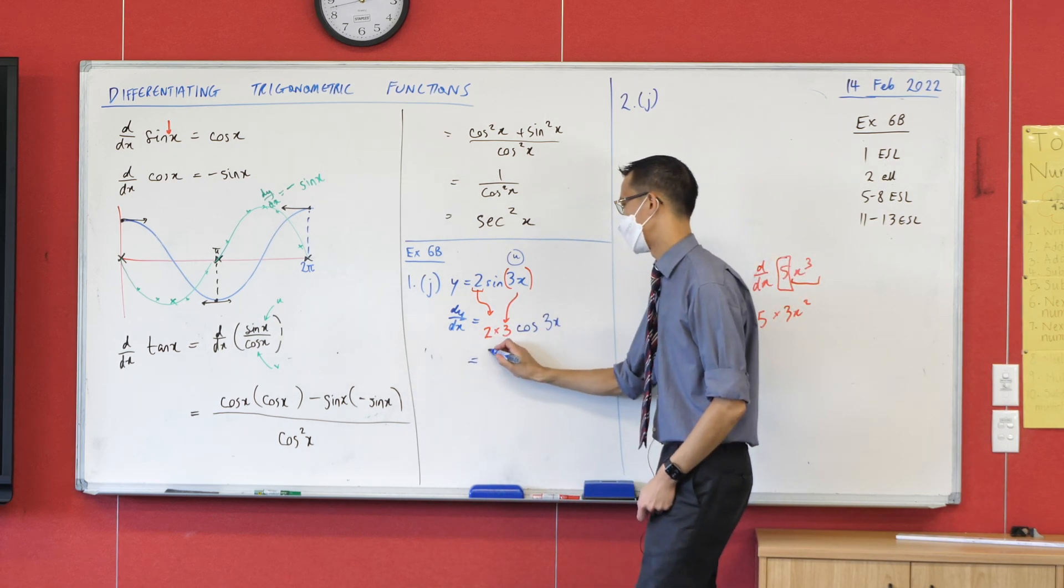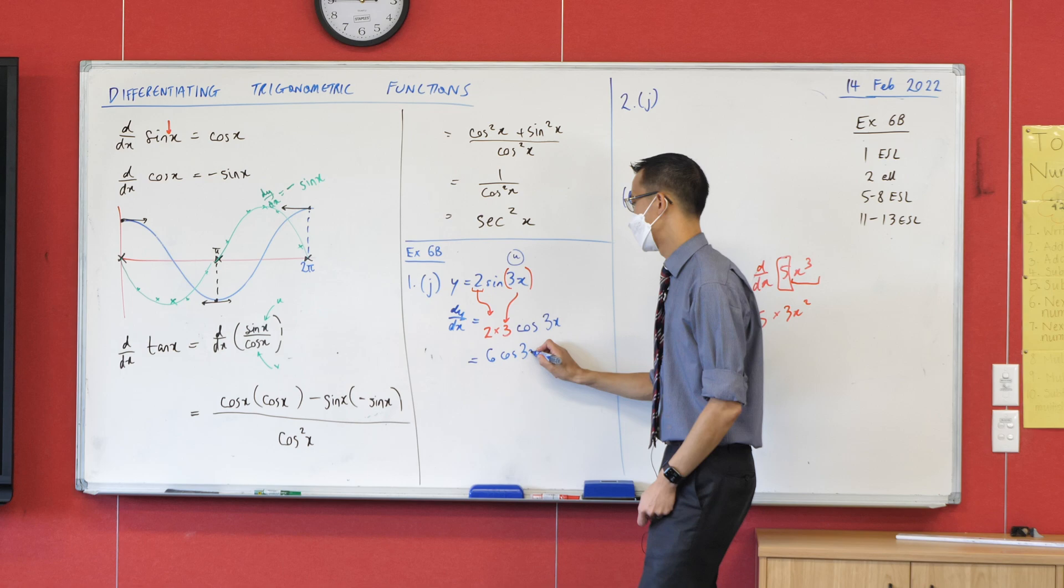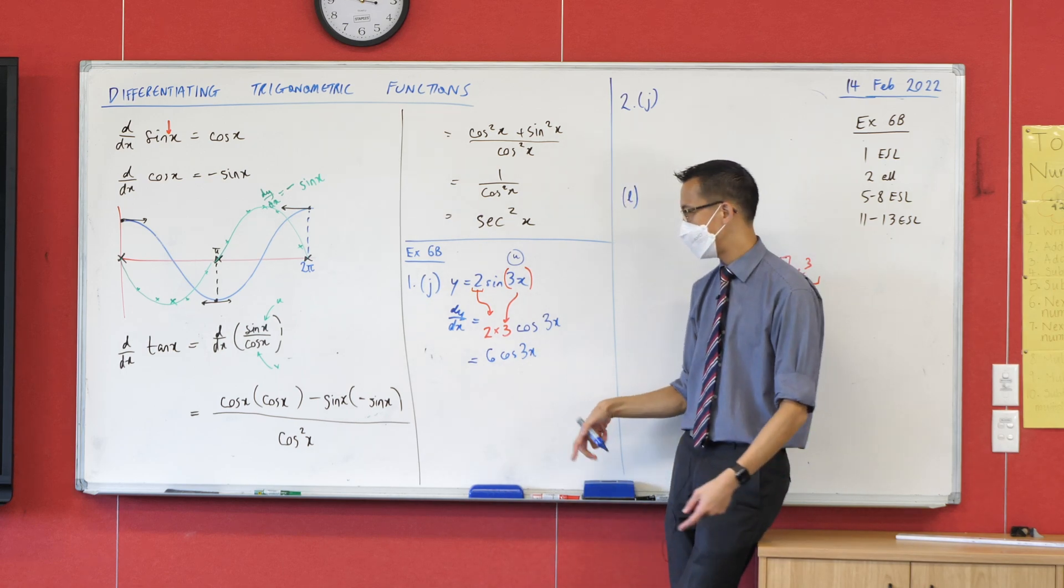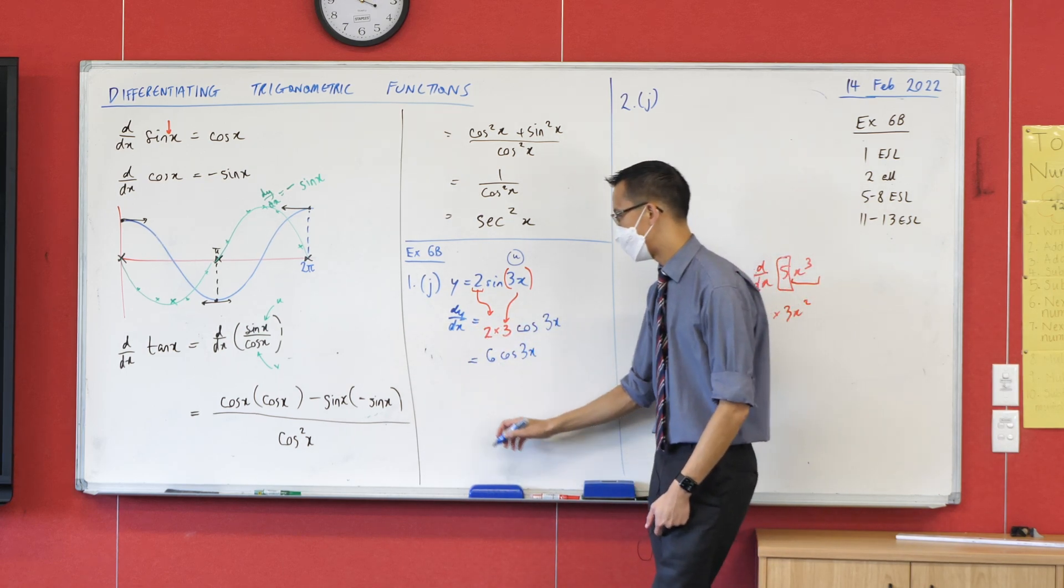Maybe I'll just write it just here for completeness. 6 cos 3x. So you can see there's the different components you're doing each one at a time.